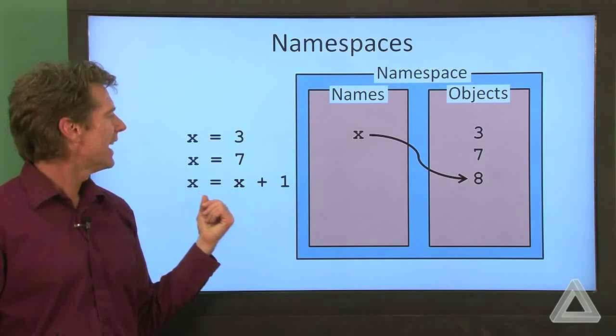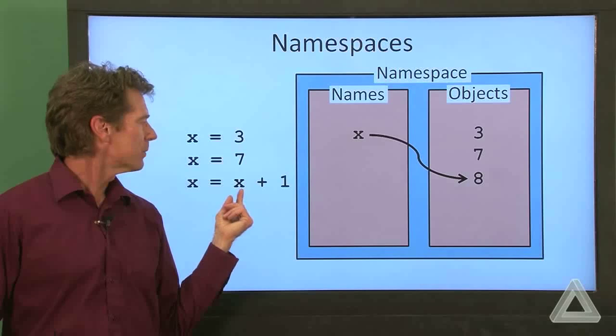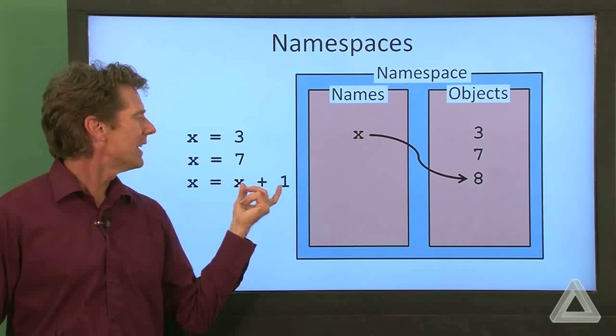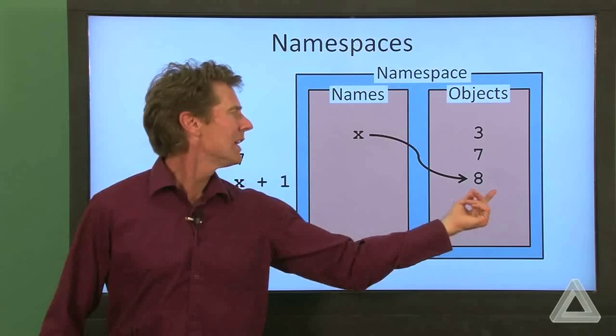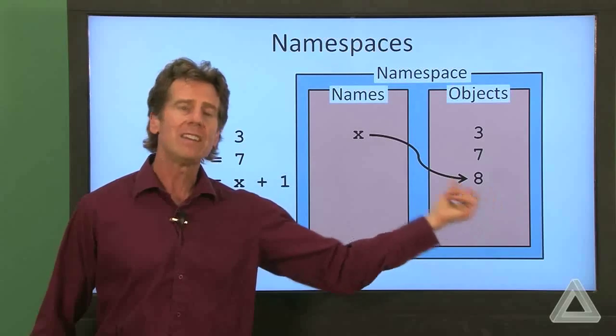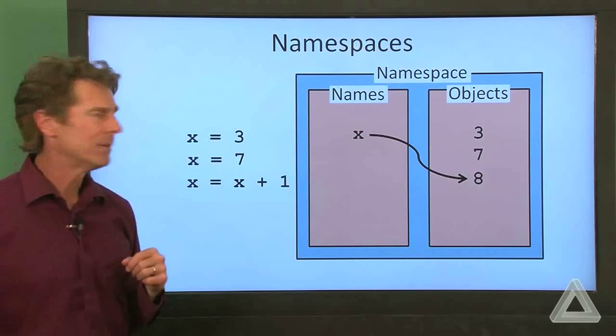And then if we increment x by 1, we get the former value of x was 7. We add to that 1, we get 8. We reassign that to the value of x. So in memory, we have 8 there, and x is now associated with that.